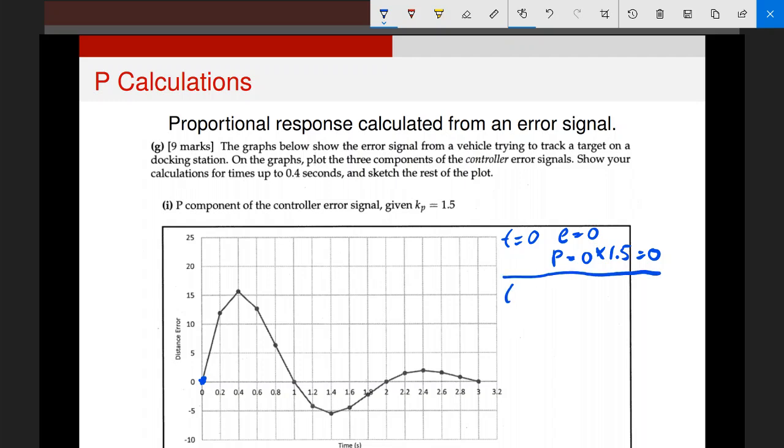Now let's try it for a more interesting example. Let's do it at time equals 0.2. At 0.2, my error signal, if I read it off this graph here, it looks around about the number 12 to me. And so my proportion is going to be, instead of zero now, it's going to be 12 times 1.5. And that will be that product there, which is going to be 18. That is going to be my proportional value at t equals 0.2 seconds. And I can draw that on my graph as well. It's going to be up here.